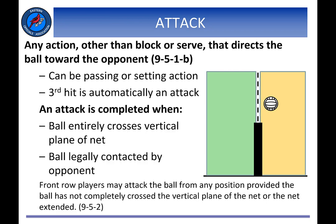Provided the ball has not completely crossed the vertical plane of the net or the net extended, front row players are allowed to attack from any position — in front of or behind the attack line, and also above or below the height of the net.